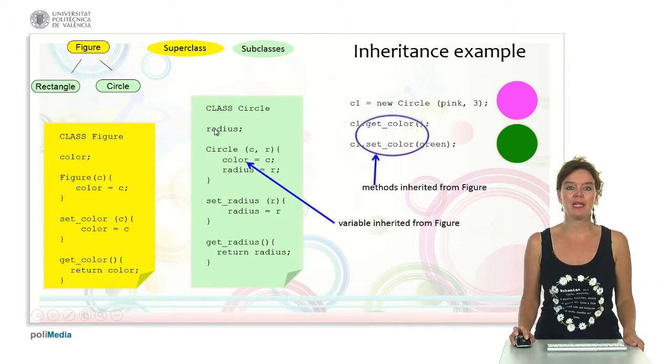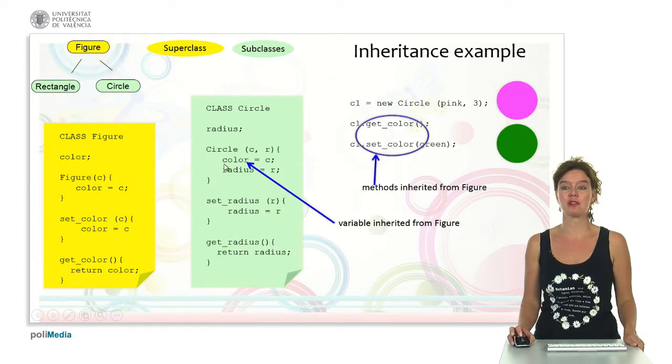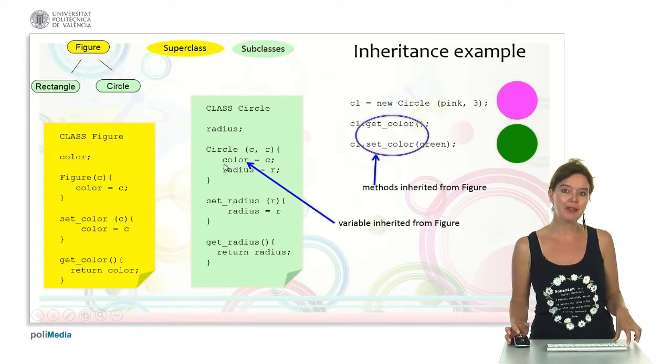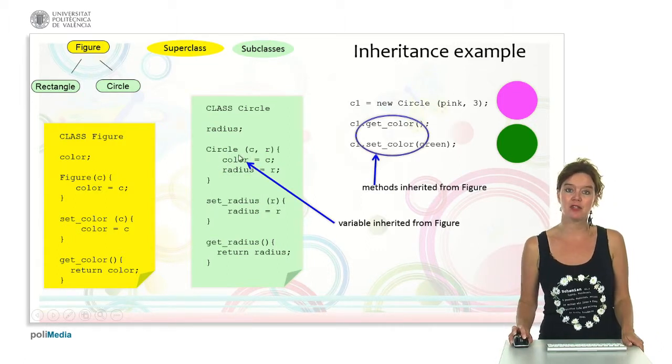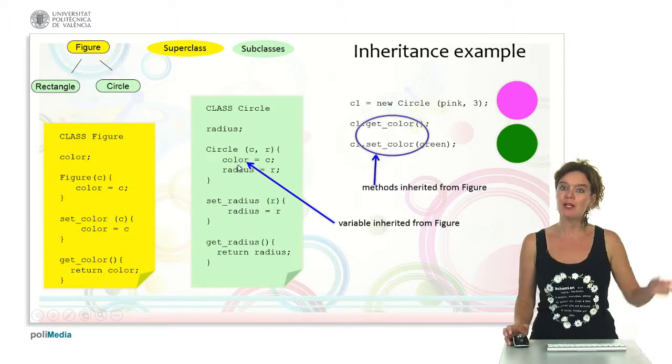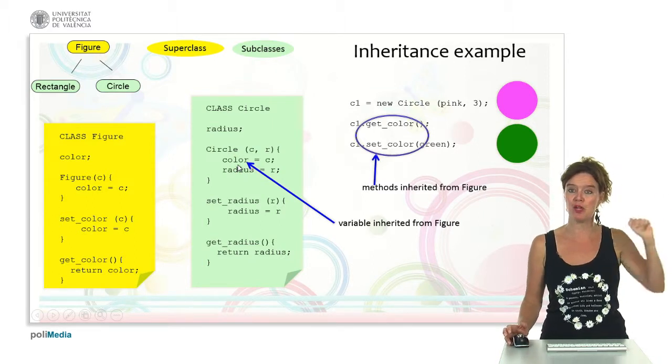So it defines an attribute radius. Here we have the constructor that now sets the color and the radius. See that the class circle can just use the attribute color because it inherits it from its superclass figure.